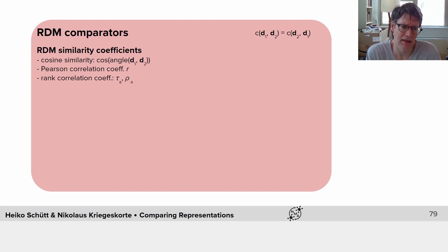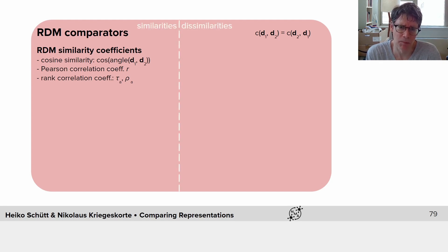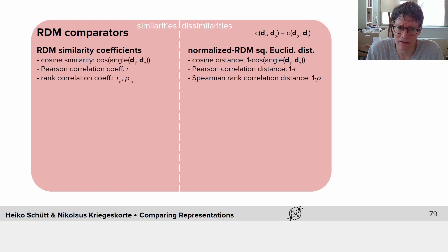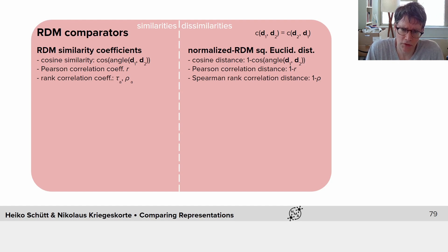We usually don't care about scaling, so cosine similarity is the strictest we usually consider. These are all similarity coefficients, but if we want dissimilarities, we can convert them by taking their complements: one minus the cosine of the angle between the two vectors, one minus the Pearson correlation coefficient, or one minus the Spearman rank correlation coefficient (one minus rho). These correspond one-to-one — they give the same information — one is a similarity, the other a dissimilarity.